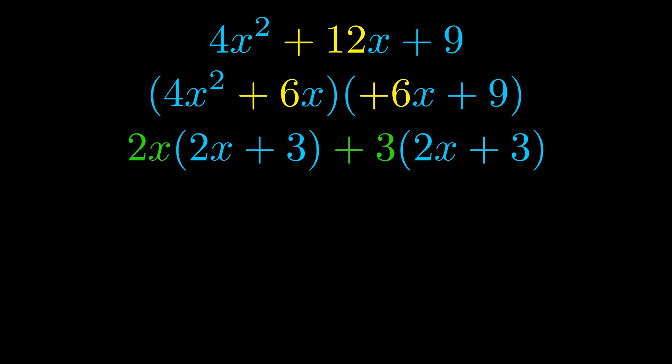Notice also how what remains inside of the parentheses is the same in both cases. The blue values are the same. Those blue values will become one of our factors and we will combine the two green values the GCFs that we pulled out to get the other one. And that is our fully factored equation.